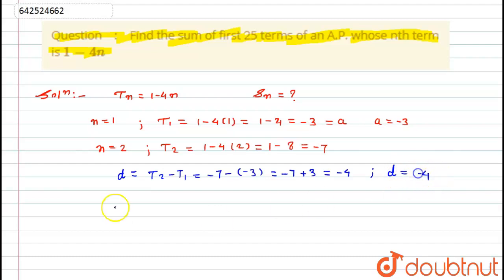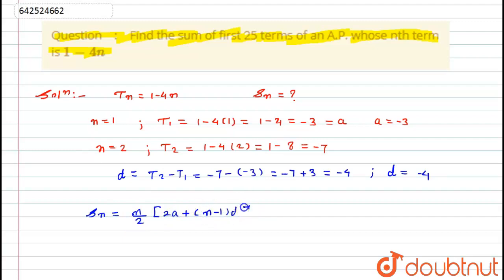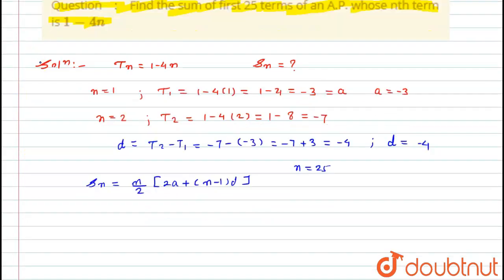Now I want to find the sum of the first 25 terms. The formula for the sum of n terms is S(n) is equal to n divided by 2, in bracket: twice of a plus (n minus 1) into d. Here I want to find the sum for 25 terms, so the value of n will be equal to 25.